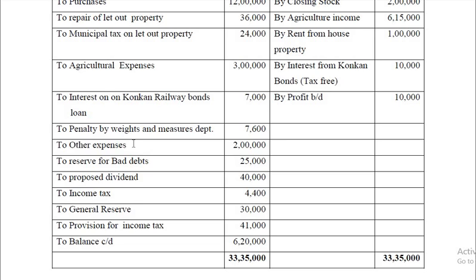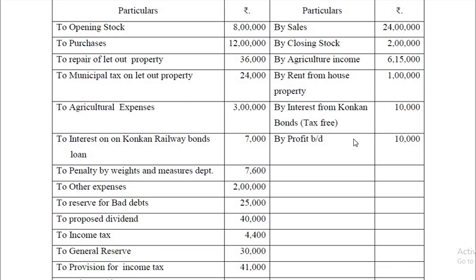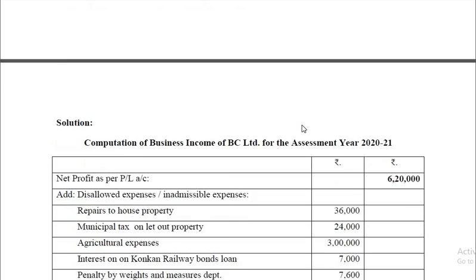Depreciation on revaluation of assets is not to be added. Agriculture income and exempt items are to be added back as they relate to exempt income. On the credit side, agriculture income should be deducted while computing business income because it is exempt from tax. Rent from house property should be deducted as it relates to income from house property. Interest from Concam Railway Bonds should also be deducted, as it is exempt. This way we arrive at the business income.